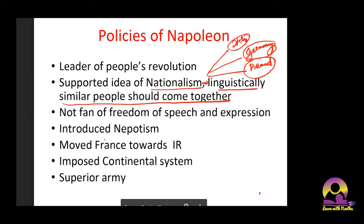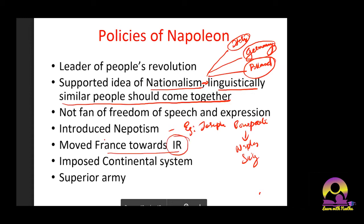Third policy: Napoleon was not a fan of freedom of speech and expression. What he said on paper and what he actually did were two different things. When he was emperor, even more than five to seven people could not stand in a street — he was that strict. Education was designed to make people lenient toward the state. Fourth: he introduced nepotism — for example, Joseph Bonaparte was given the responsibility of Naples and Sicily.